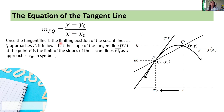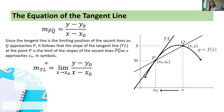Since the tangent line is the limiting position of the secant lines as Q approaches P, it follows that the slope of the tangent line TL at point P is the limit of the slopes of the secant lines PQ as x approaches x₀. In symbols, the slope of the tangent line equals the limit of (y minus y₀) over (x minus x₀) as x approaches x₀.